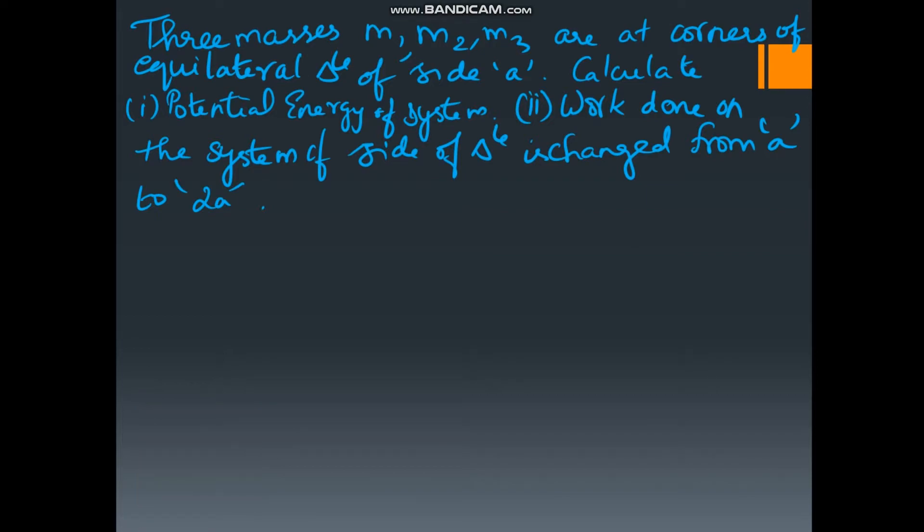First, they have three masses M1, M2, M3. Let us assume all the three masses are same. I forgot to write this detail in the question. They are at corners of equilateral triangle of side A. Calculate potential energy of the system.